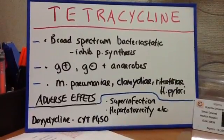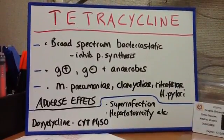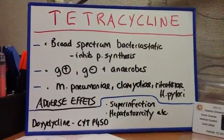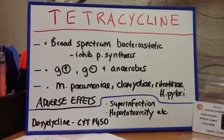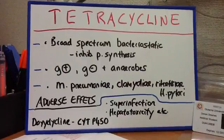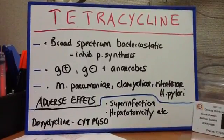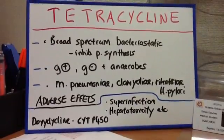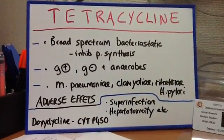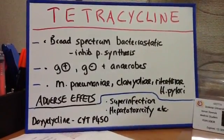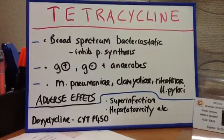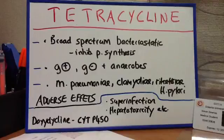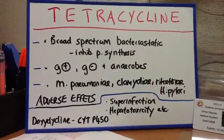So now we'll have a little chat about tetracycline. Tetracycline is a broad-spectrum bacteriostatic drug which inhibits the protein synthesis of the bacteria. This is working on gram-positive, gram-negative, and anaerobes. You can have short-acting tetracyclines, intermediate-acting, and long-acting ones, for example doxycycline or minocycline.